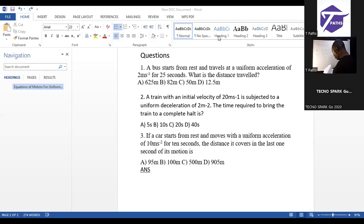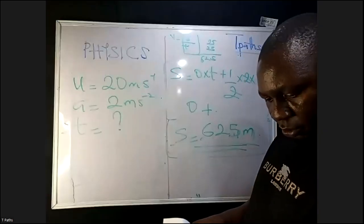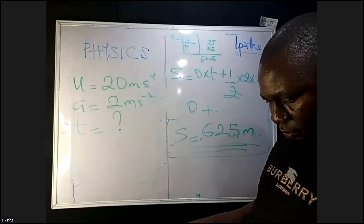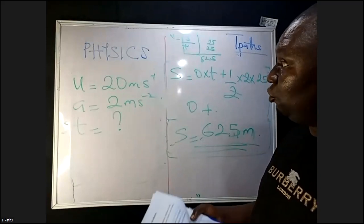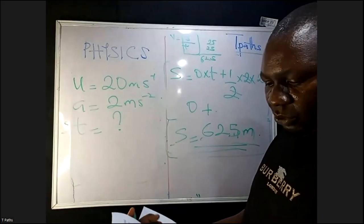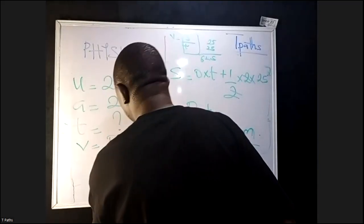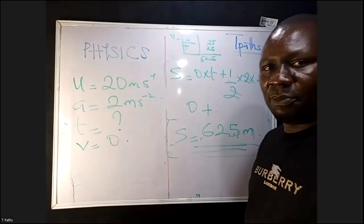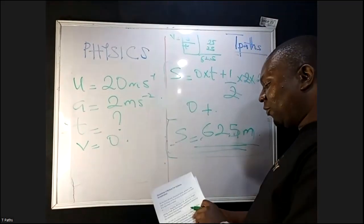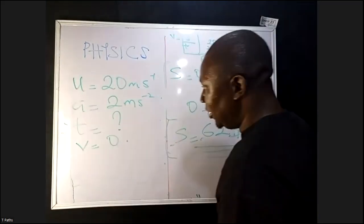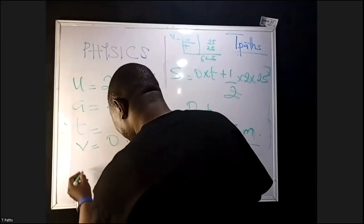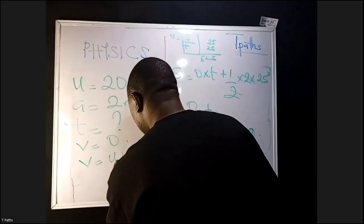Which equation of motion will suit this? You are given initial velocity and uniform deceleration — since it comes to a halt, the final velocity V is zero. Therefore, the first equation of motion, V = U + AT, is what we apply because it has both initial velocity and acceleration.